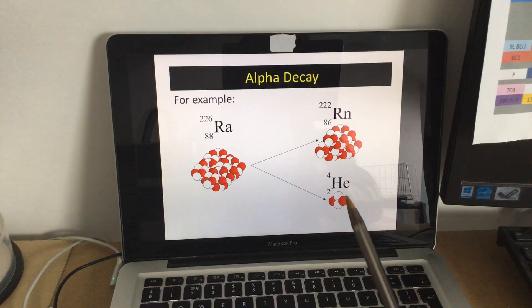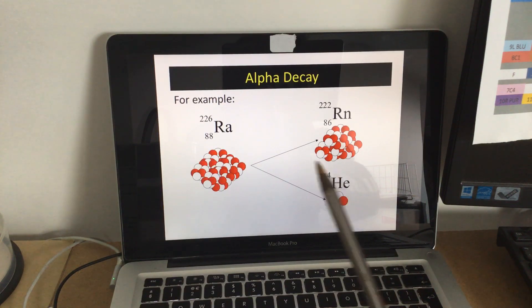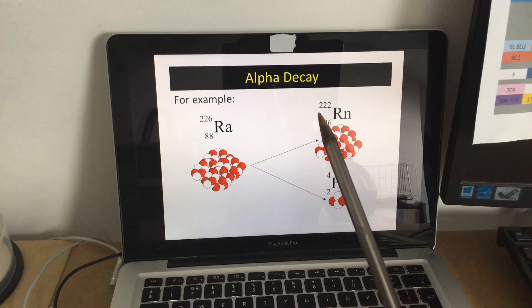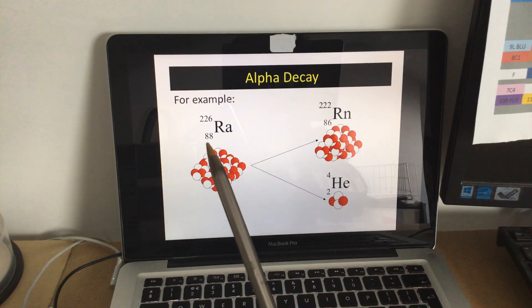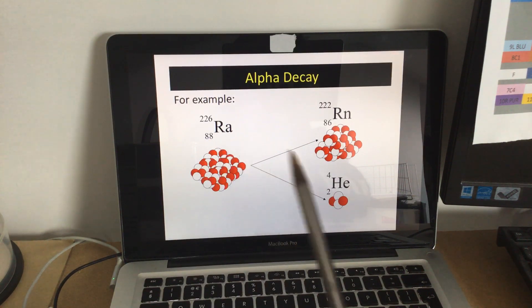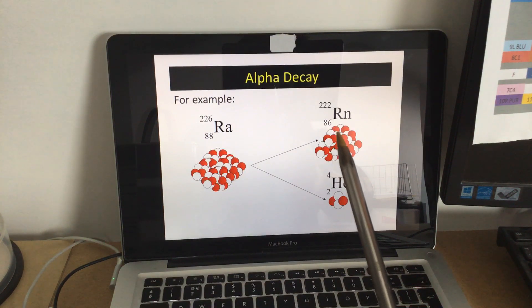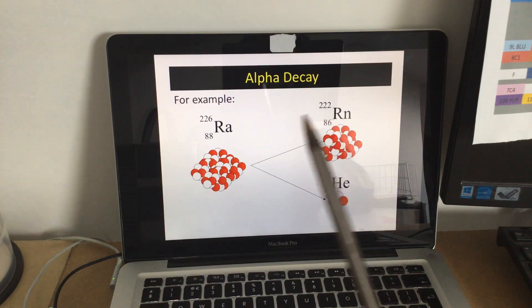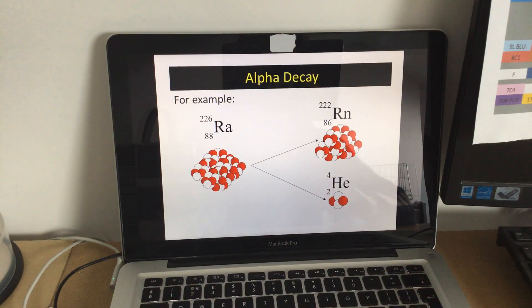Because now it's lost a mass of four, it's lost four particles, the mass number has gone down from 226 to 222, and the proton number, or the atomic number, whichever you prefer to call it, has gone from 88, it's lost two protons, so it's gone down by 2 to 86. In other words, this number goes down by 4, because there are a mass of 4 lost, and this number goes down by 2, because there are two protons that have been lost.